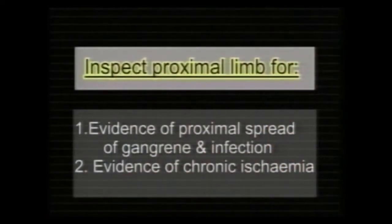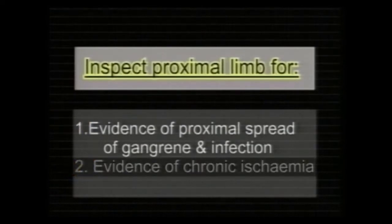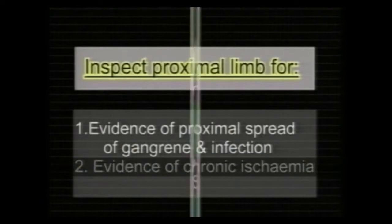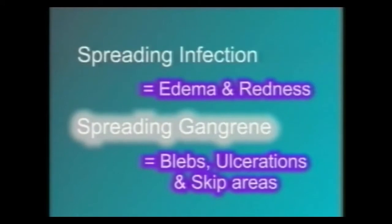Now inspect the proximal limb for evidence of proximal spread of gangrene and infection and for evidence of chronic ischemia. First, we look for proximal spread of the gangrene. Presence of redness and edema in the proximal skin suggests active infection as in a wet gangrene. The skin may show blebs, ulceration and black colored skip areas suggesting proximal spread of the gangrene.